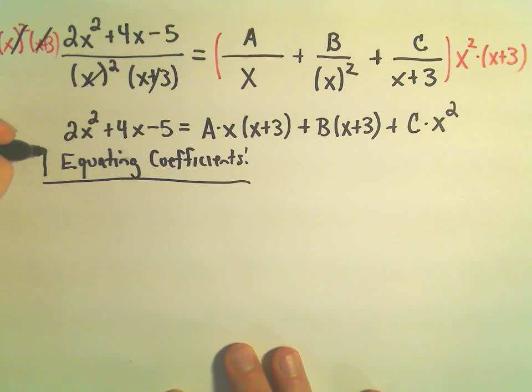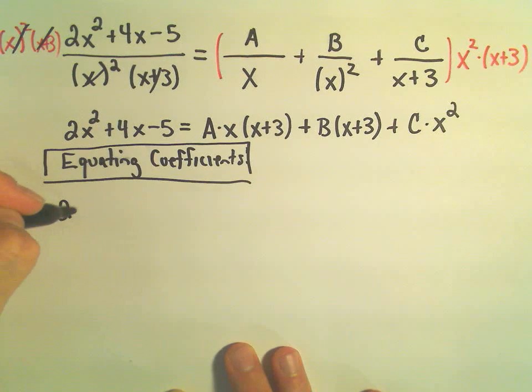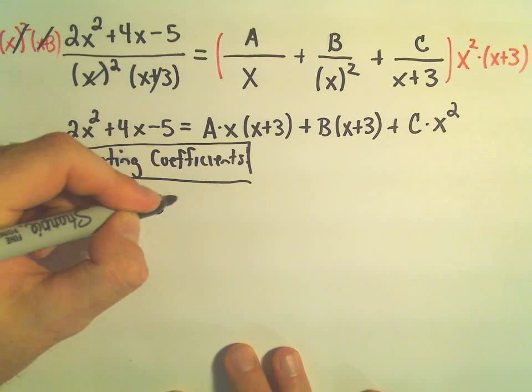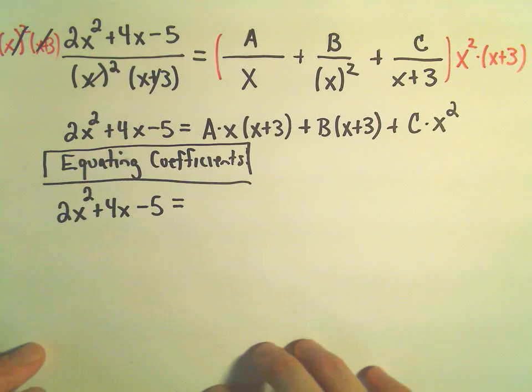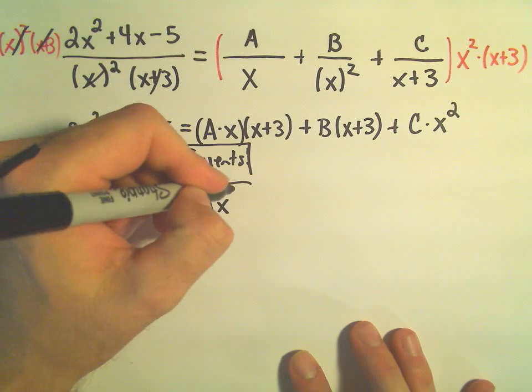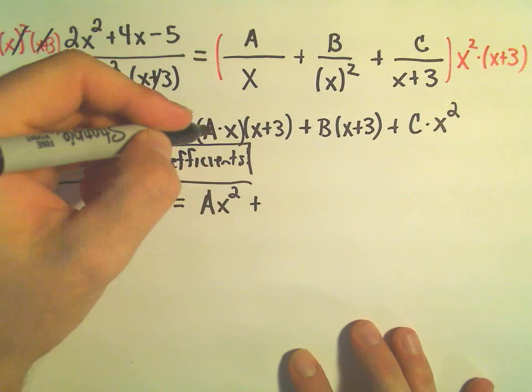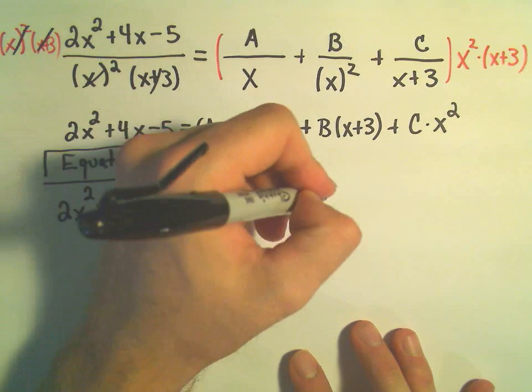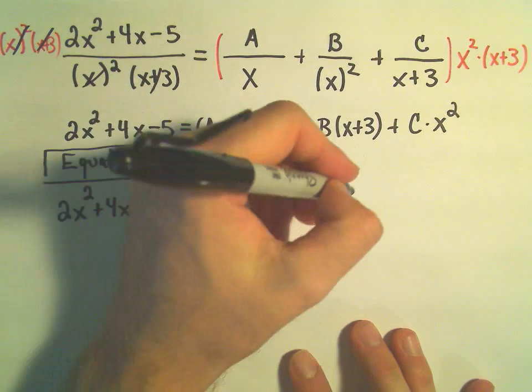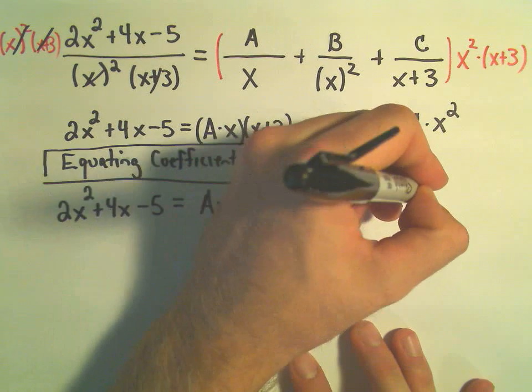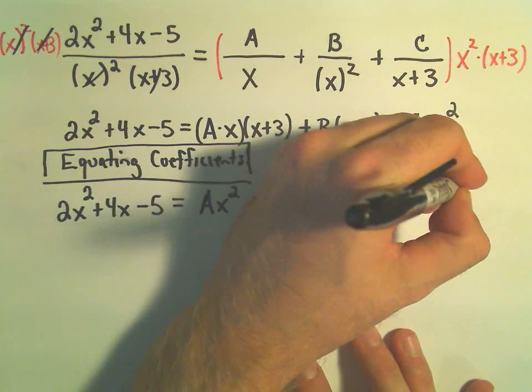Okay, so basically what I do, the left side I just leave alone, 2x squared plus 4x minus 5. The right side I basically get rid of all the parentheses. So to me I see an Ax times x. That would be Ax squared. I would have Ax times 3. I'm going to write that as 3Ax. If we distribute our B, we'll have Bx plus 3B. And then we have our C times x squared.